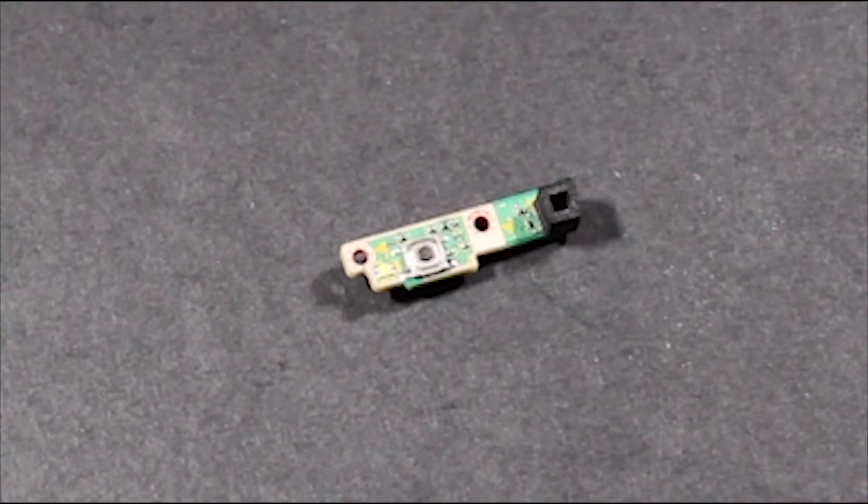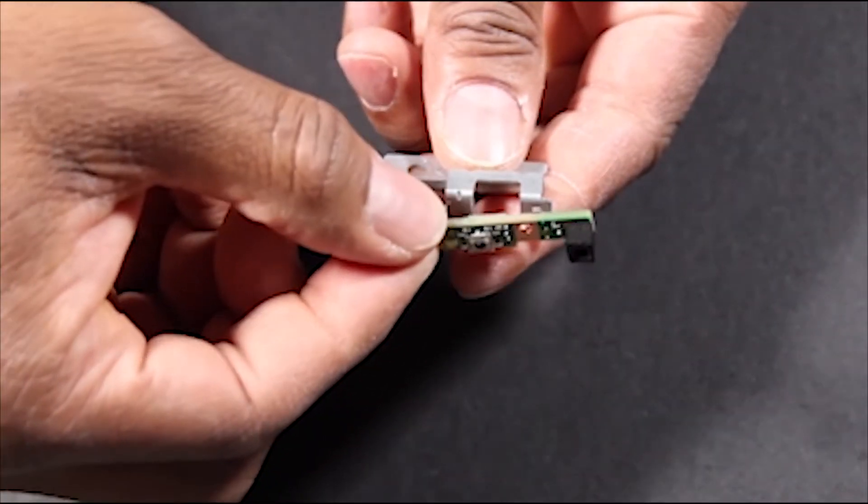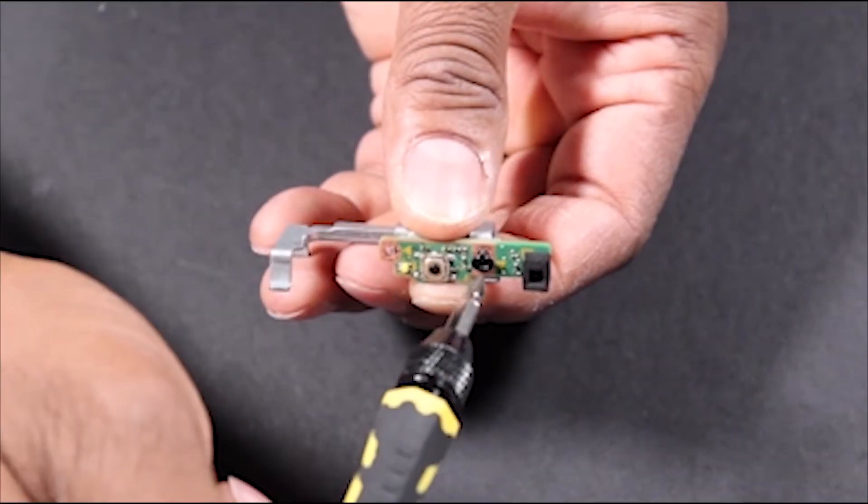Replacement. Place the power button board onto its assembly and secure with its Phillips number one screw.